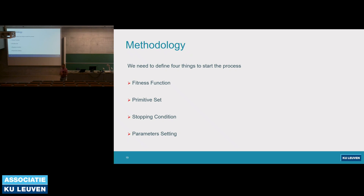For the methodology, when you start the evolutionary process you need to define four things: a fitness function, a primitive set, stopping conditions, and parameter settings. The fitness function is any criteria that tells you whether your function is good or bad — in our case, it was the sum of the three metrics targeting 240. The primitive set provides all the genes your chromosome is made of — in our case, a combination of logic circuit gates. We used Monte Carlo simulation, training our algorithm with 2,400 bit flips, flipping each of the 96 bits and checking how many output bits changed. All results reported are based on large-scale testing.